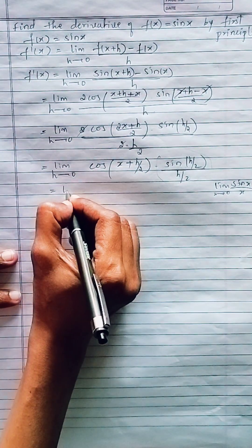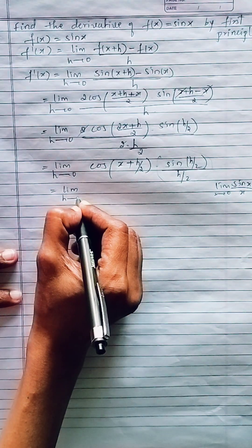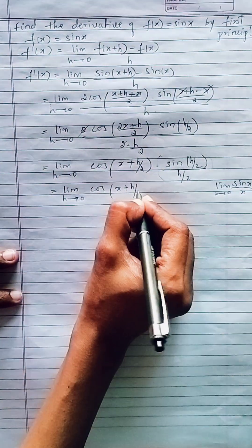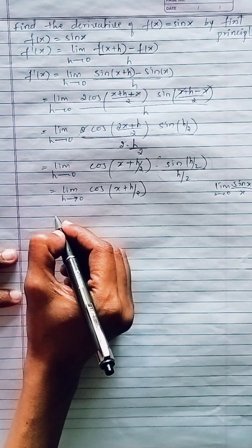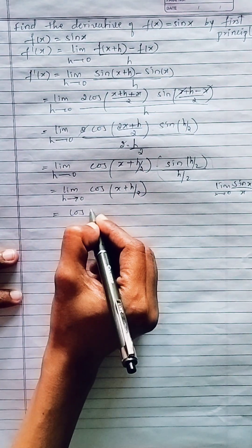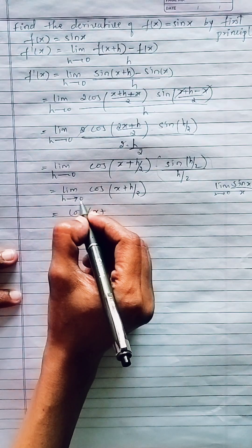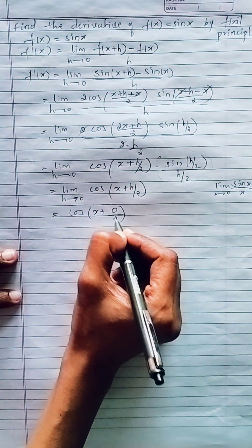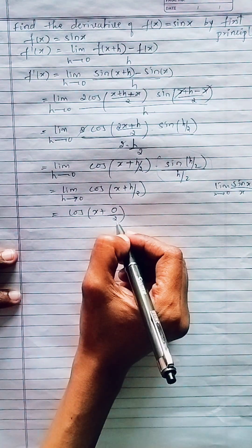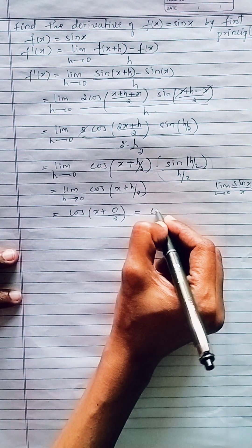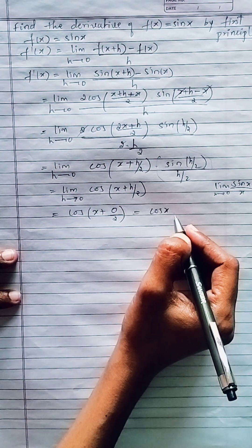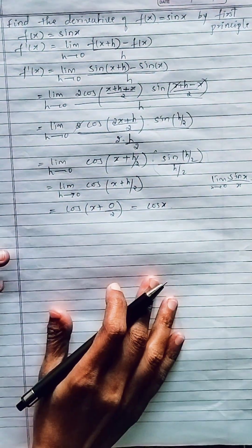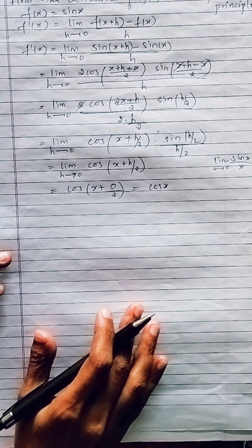The remaining first term is limit h tends to 0 of cos(x + h/2). Applying the limit by substituting h = 0, we get cos(x + 0/2) = cos x. So using first principles, for f(x) = sin x we got f'(x) = cos x.